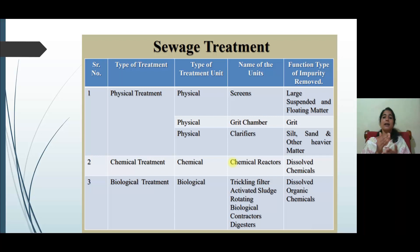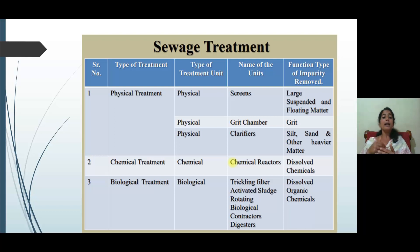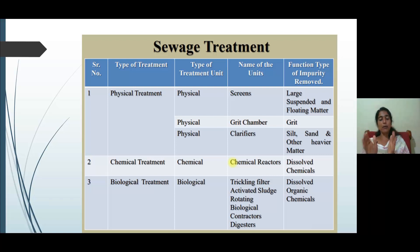In screens, large suspended solids and floating matter will be removed. In the grit chamber, grit particles — that is particles with a specific gravity ranging from 2 to 2.65 — will get removed. In clarifiers, silt, sand, and other heavier matter will get removed. In chemical treatment, chemical reactors are used to remove dissolved chemicals — this is a most important and somewhat difficult part of wastewater treatment. In biological treatment, methods such as trickling filters, activated sludge process, rotating biological contactors, and sludge digesters are used, by which dissolved organic chemicals can be removed from the wastewater.